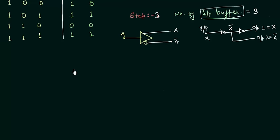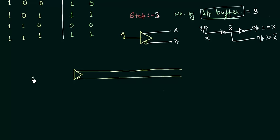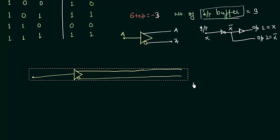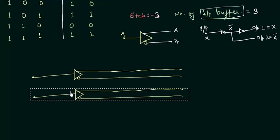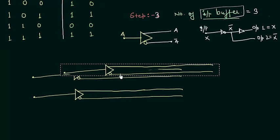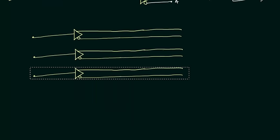So let's make the input buffers. Each input buffer has 2 horizontal lines as output and 1 horizontal line as input. Since we require 3 input buffers, we copy and paste it 3 times. Now it's time to write down the variables: here A, here B, and here C.